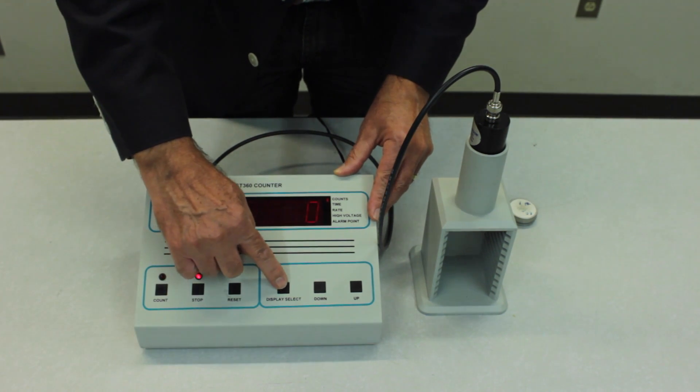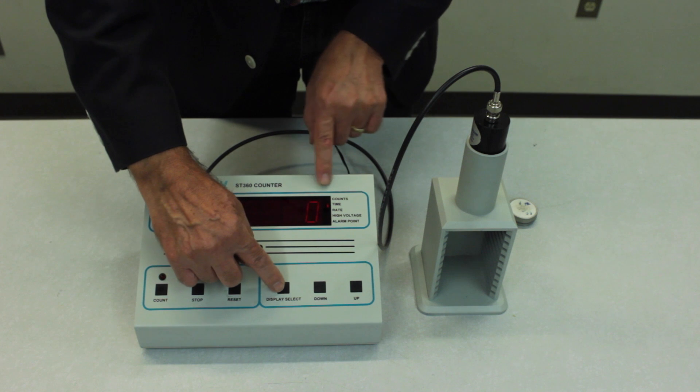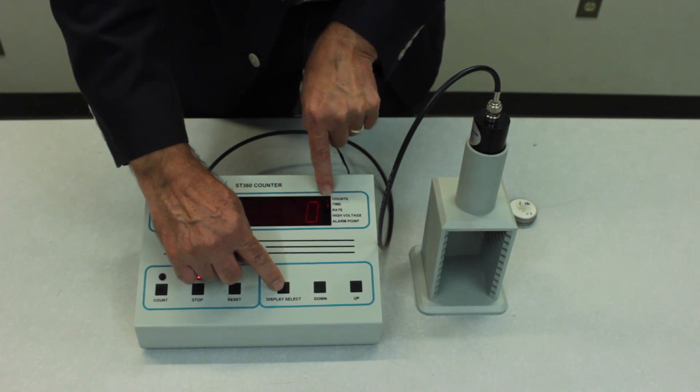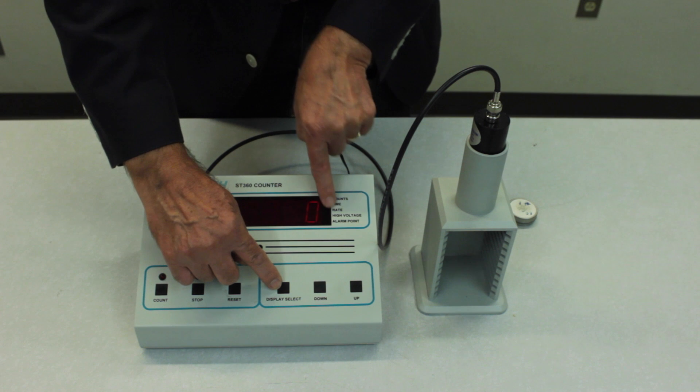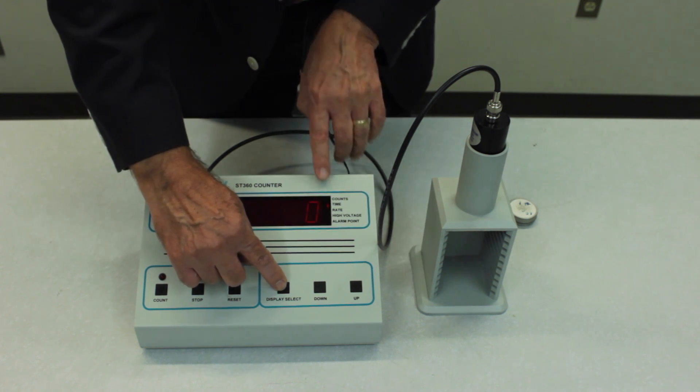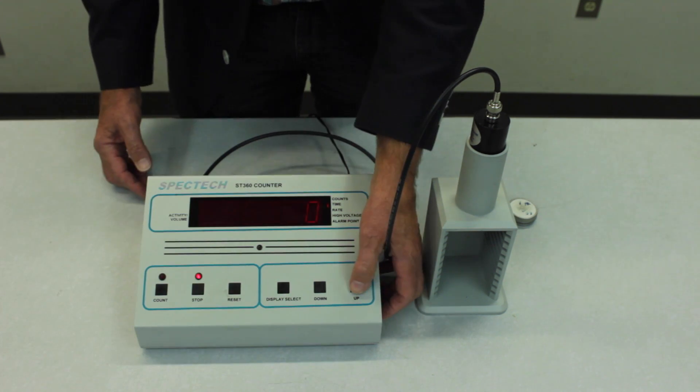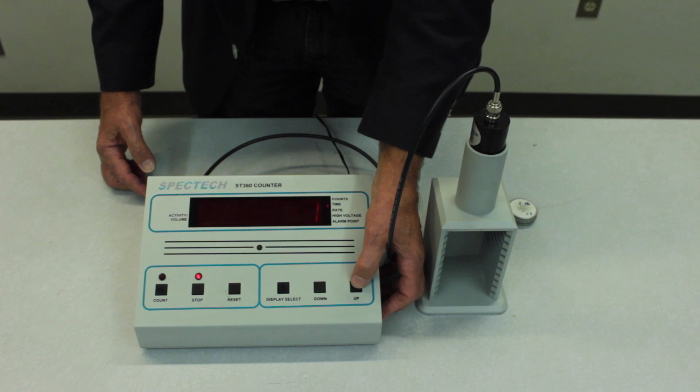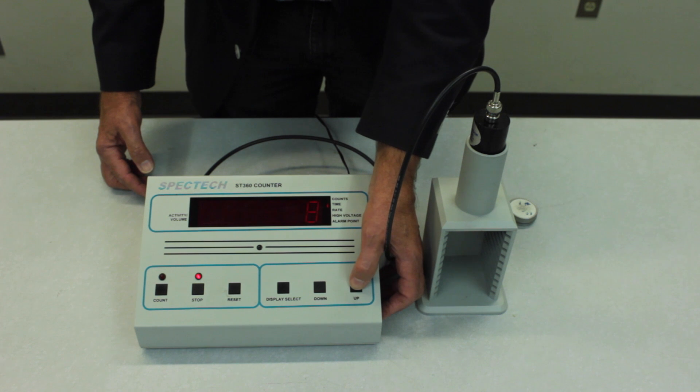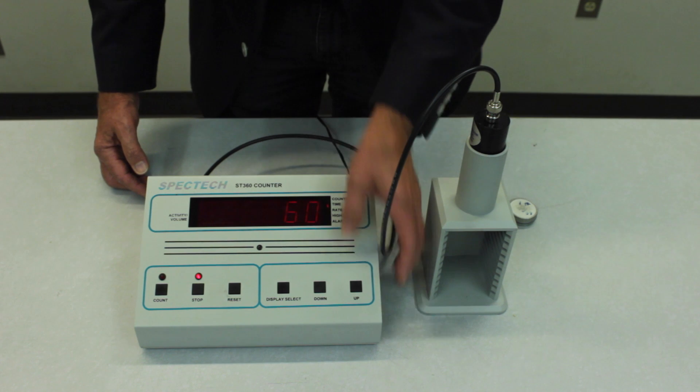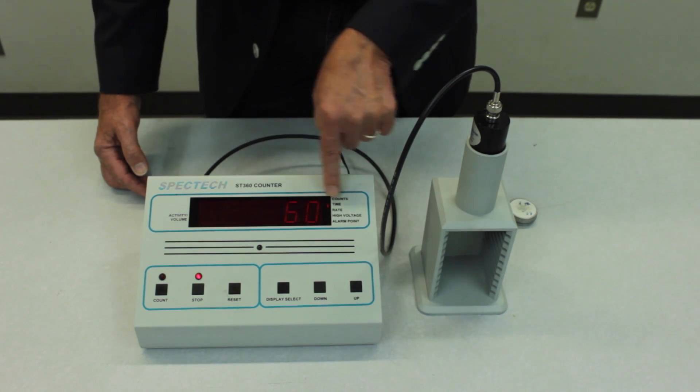So you choose the display select button and that moves the cursor on the right side of the window to these various functions. So let's start by setting the time and we'll just press the up button to increase the time. This goes in increments of one second at first up to ten seconds, and then it goes in increments of ten seconds. Let's set this at sixty seconds. So we'll do a number of counts per minute. So set the time interval for sixty seconds.